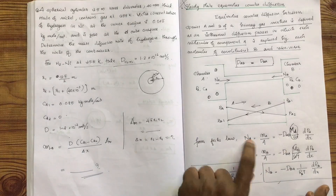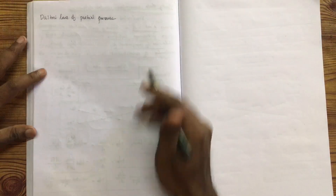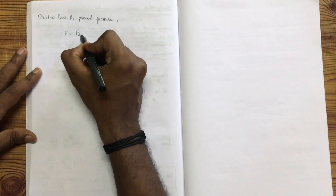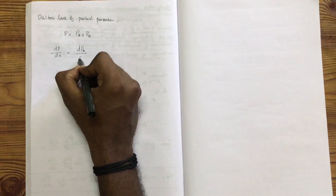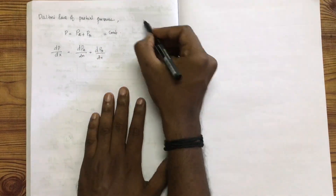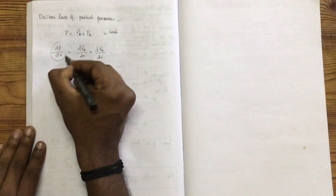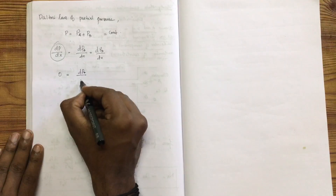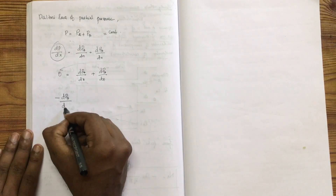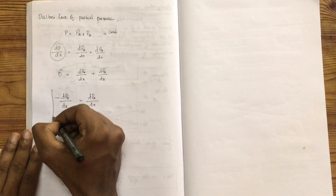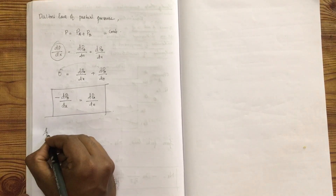The total pressure is equal to the sum of the partial pressures of the constituents, that is PA plus PB. Differentiating with respect to x gives dPA by dx plus dPB by dx equals zero, since total pressure in the mixture is constant. Therefore, minus dPB by dx is equal to dPA by dx. Total pressure remains constant for equimolar counter diffusion.